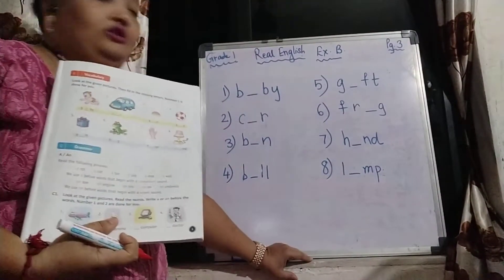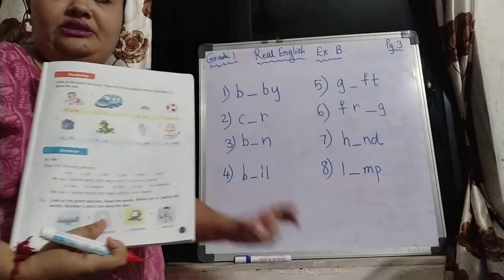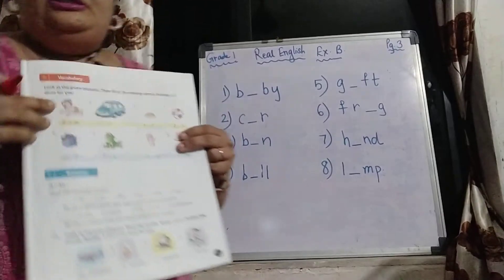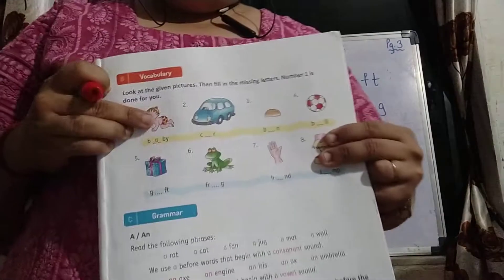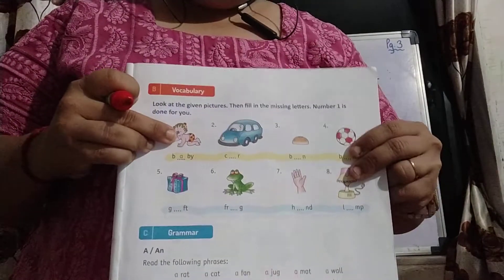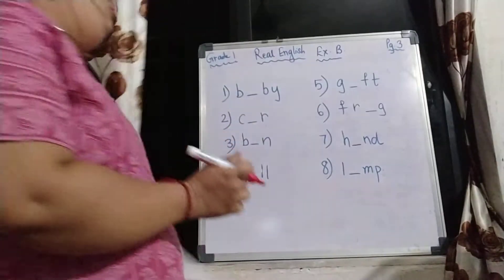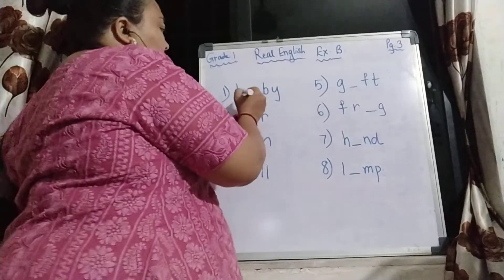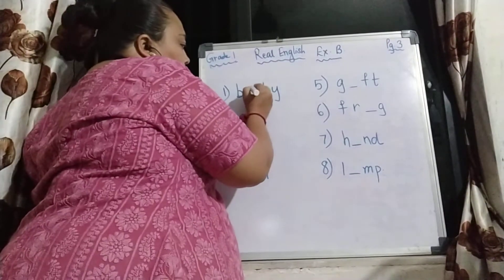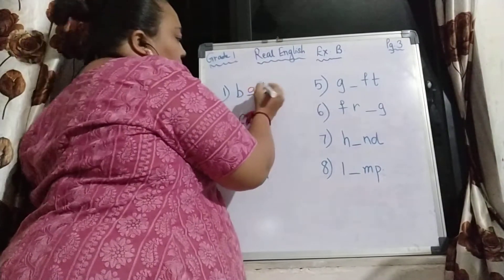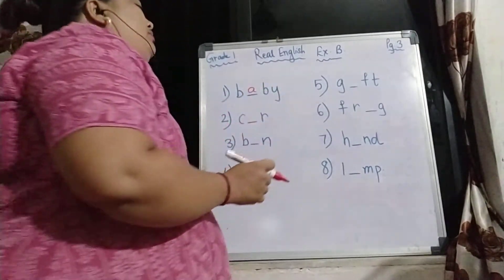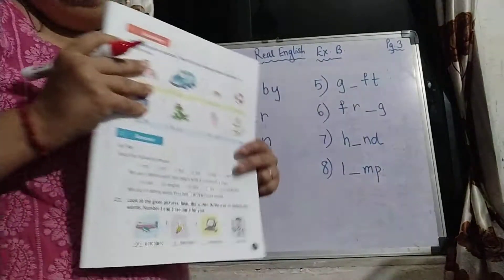So the first one is C. Which picture is this? This is a baby. So baby's spelling is B-A-B-Y. Baby.